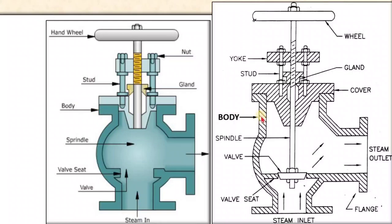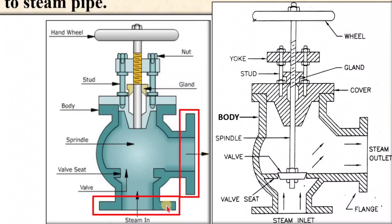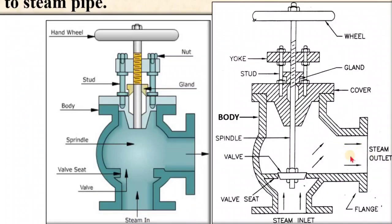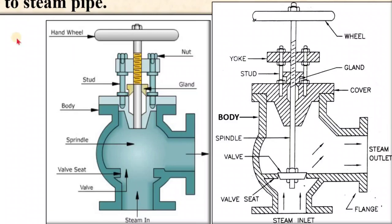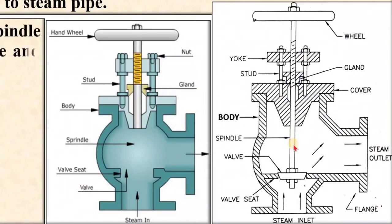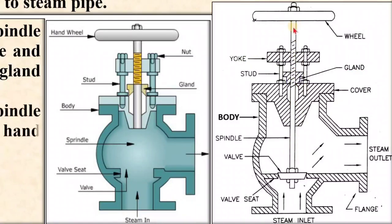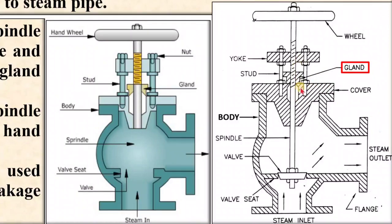It consists of a valve body — here you can see — made of cast iron, having two flanges at right angles to each other. One flange is bolted to the boiler at the top of the steam space and the other is connected to the steam pipe, from which steam can be sent to the engine or turbine. The lowest end of the spindle is connected to the valve and passes through the gland and yoke. The upper end of the spindle is connected with the hand wheel. The gland is generally used to prevent the leakage of steam.